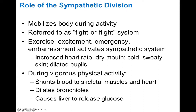During vigorous physical activity, the sympathetic nervous system helps shunt blood towards your skeletal muscles and heart. It dilates your bronchioles to increase airflow into your airways, and causes your liver to release glucose to mobilize energy usage by your skeletal muscles and other tissues of your body.